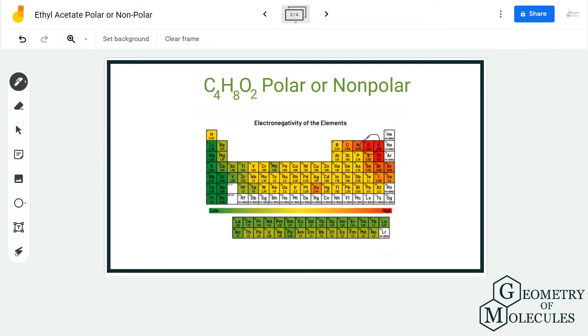If you look at this periodic table, you can see that oxygen has an electronegativity value of 3.44, carbon is 2.55, and hydrogen is 2.20. Now, if you compare the electronegativities of hydrogen